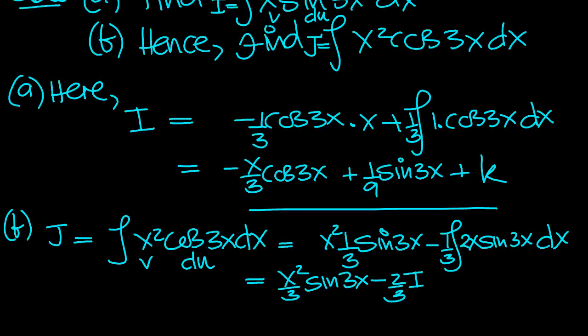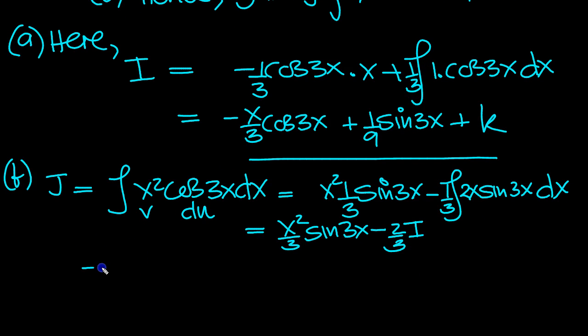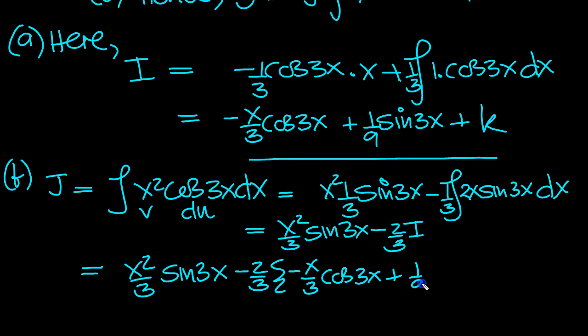So that equals x squared over 3 sine 3x, minus 2 thirds rather, minus 2 thirds of i, which is this stuff here, minus x over 3 cosine 3x, plus 1 ninth sine 3x.